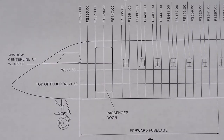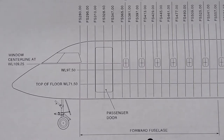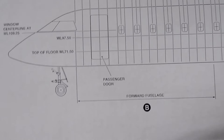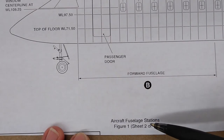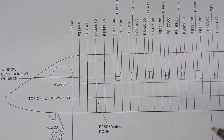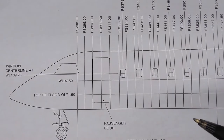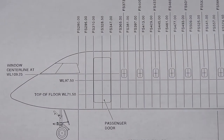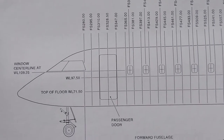There are three dimensions to locate things in an aircraft: forward and aft, side to side, and up and down. The forward and aft direction is called fuselage stations. Those stations are defined by a number of inches — literally a distance from a reference point.